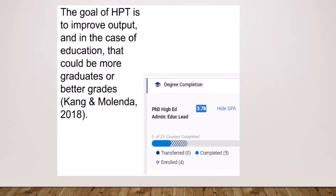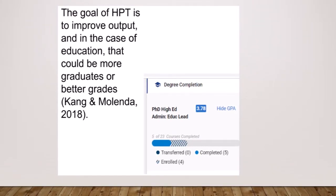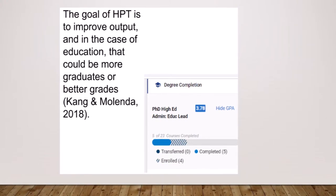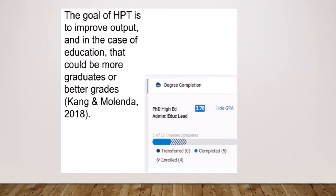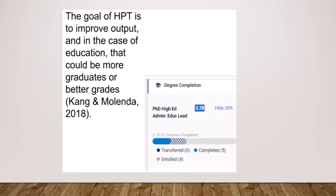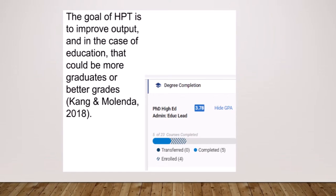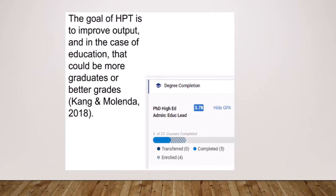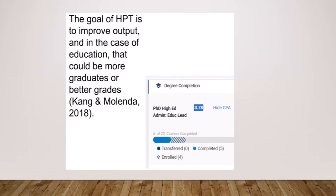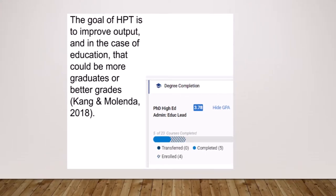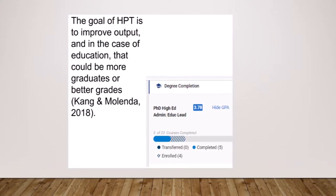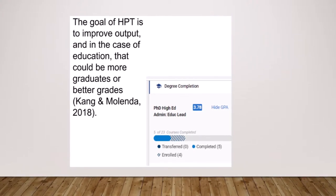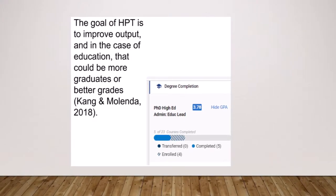The goal of HPT is to improve output, and in the case of education, that could be more graduates or better grades. Kang and Melinda write in their 2018 journal article published in Performance Improvement Quarterly that when utilizing HPT in the field, one must have a clear goal and a means to get there. If it is found that the best method for meeting the goal is not financially beneficial, then a new goal can be stated.